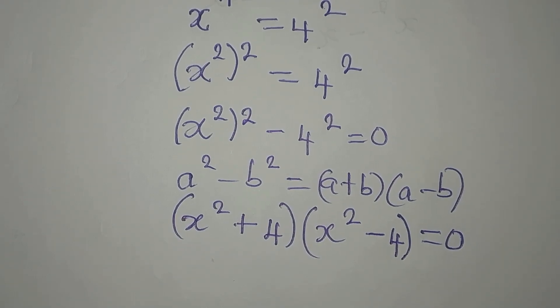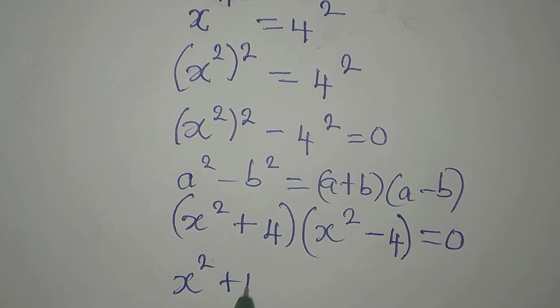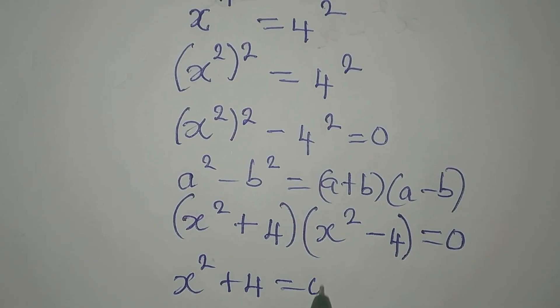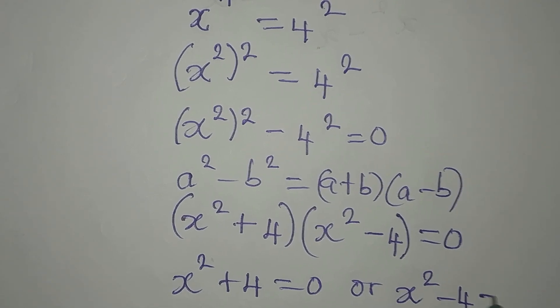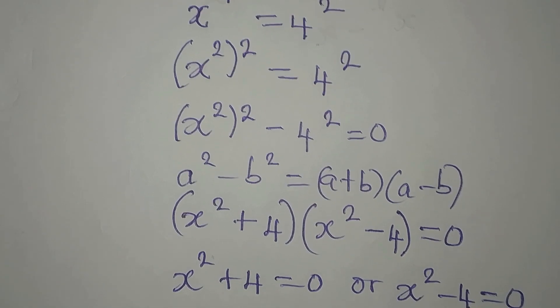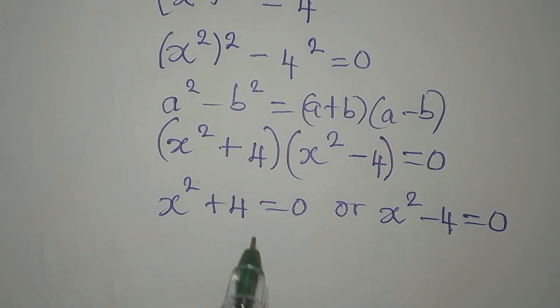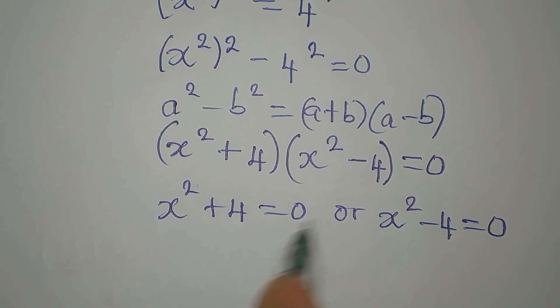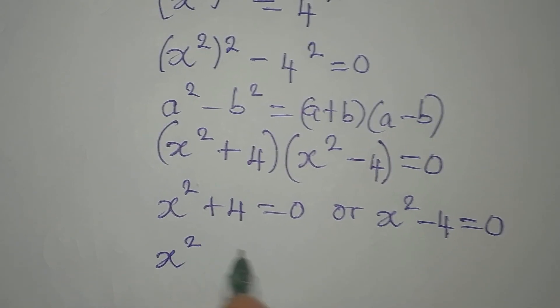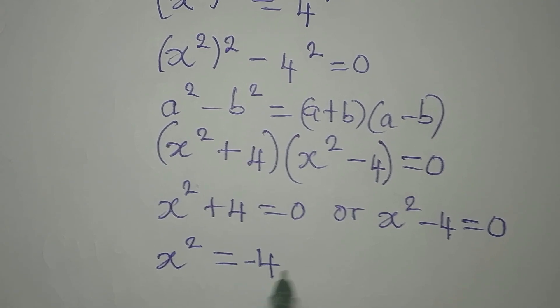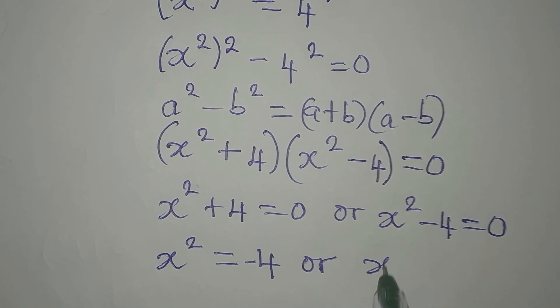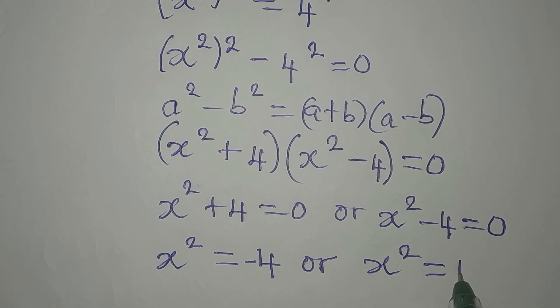Now to continue from here, it is either x squared plus 4 is equal to 0, or x squared minus 4 is equal to 0. We are going to take this to the other side, then we have x squared equals negative 4, or x squared equals positive 4.